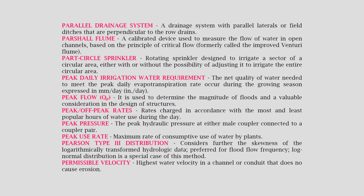Partial flume: a calibrated device used to measure the flow of water in open channels based on the principle of critical flow, formerly called the improved Venturi flume. Part circle sprinkler: a rotating sprinkler designed to irrigate a sector of a circular area, either with or without the possibility of adjusting it to irrigate the entire circular area.